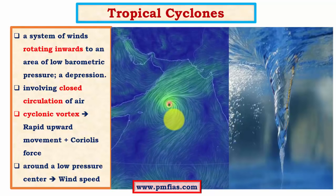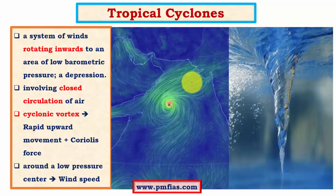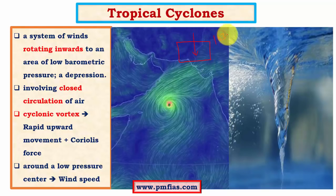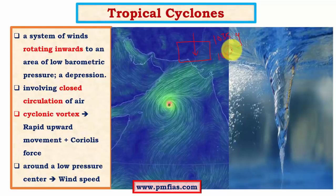Let us look at normal pressure conditions. By virtue of the atmosphere and its weight, we have atmospheric pressure. On one square centimeter of area, the pressure would be equivalent to about 1035 grams. When this pressure goes up to, say, 1060 grams per square centimeter, it is a high pressure region associated with divergence of air.